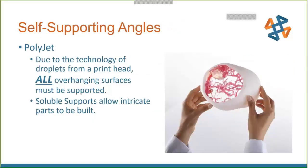With PolyJet, it's different. Because you're dropping droplets from a head, all surfaces must be supported. These are just droplets on each layer coming out of the inkjet head — it's the law of gravity. Isaac Newton limited us on that one: every droplet has to be supported.